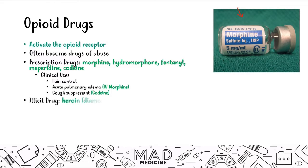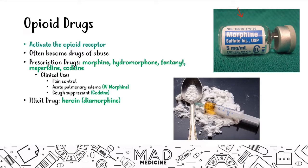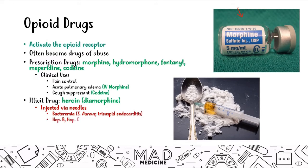When it comes to illicit drugs, the main drug you need to know is heroin, also known as diamorphine, which is injected via needles. Because of needle injection, users are at a higher risk of developing infections. IV drug users are at higher risk for bacteremia due to staph aureus — that's right-sided endocarditis — as well as viral infections including hepatitis B, hepatitis C, and HIV.